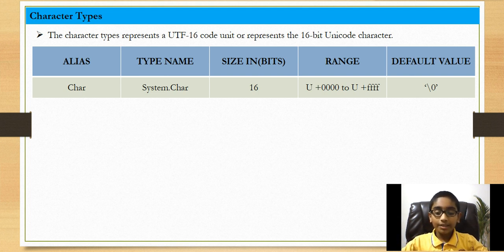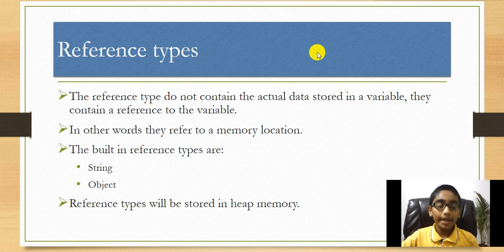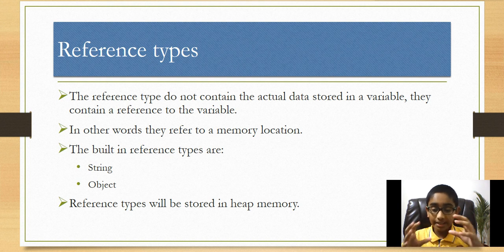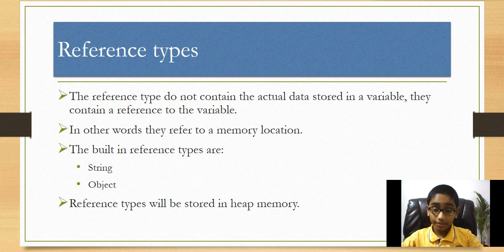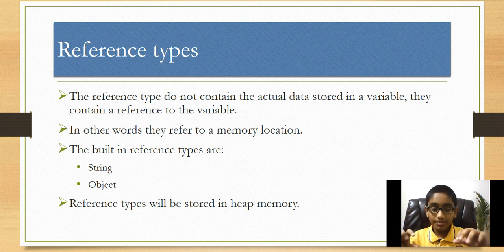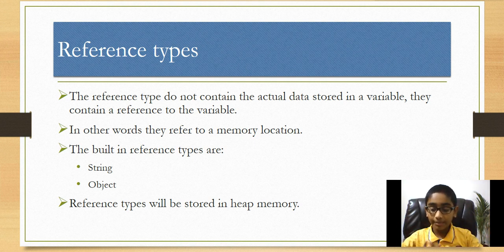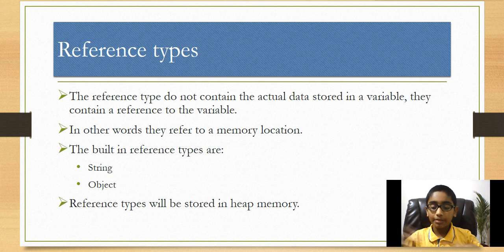Now let's move on to reference types. Reference types do not contain the actual data stored in a variable — they contain a reference to a variable. In other words, they refer to a memory location. The built-in reference types are string and object. Reference types are stored in heap memory, not in stack memory like value types. You'll learn in detail about heap and stack memory in one of my videos.